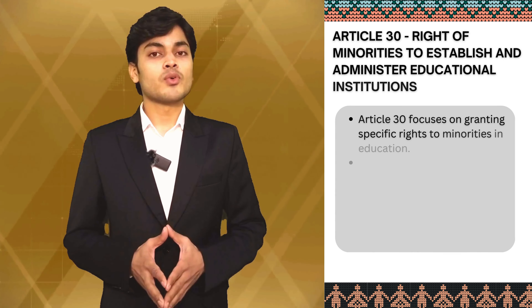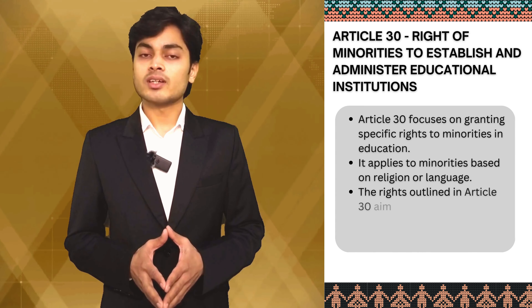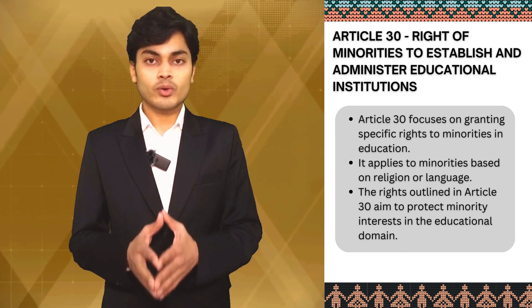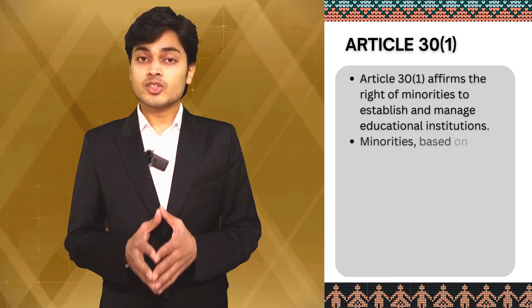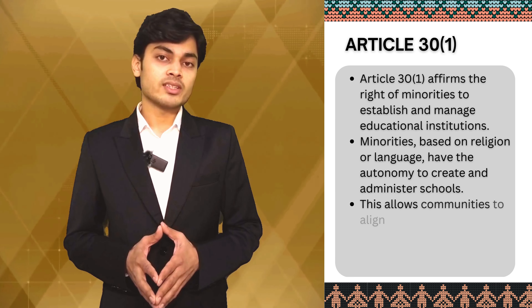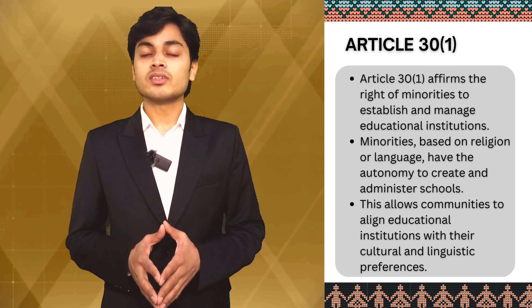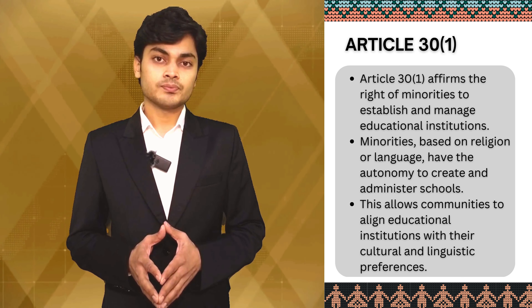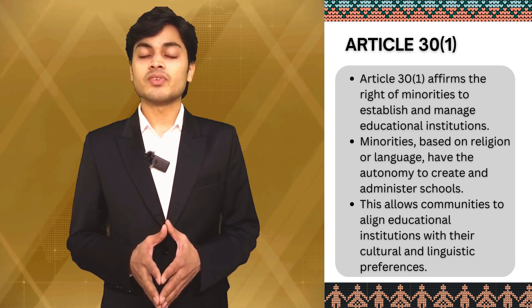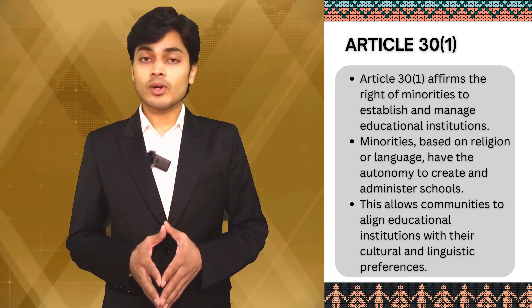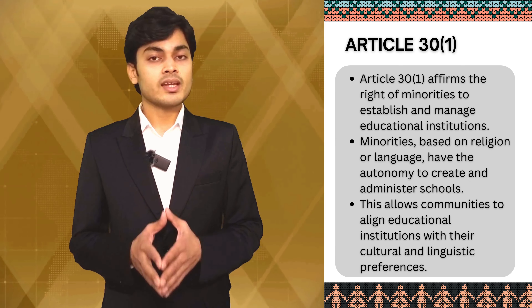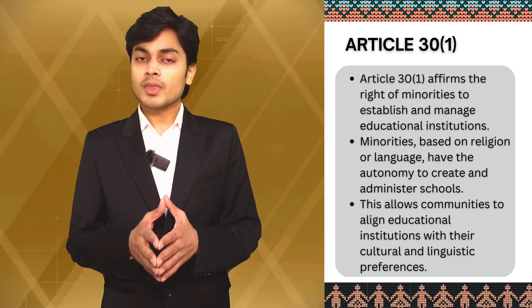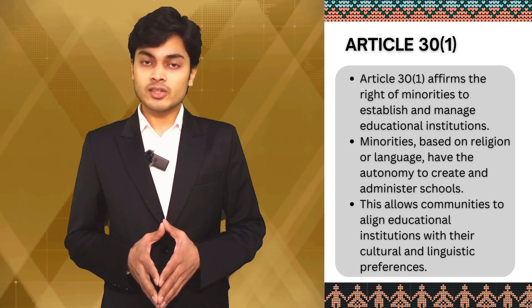Now let's shift our focus to Article 30, which grants specific rights to minorities, whether based on religion or language, in the realm of education. Clause 1 of Article 30 establishes the right of minorities to establish and administer educational institutions of their choice. This means that communities, whether defined by religion or language, have the autonomy to set up and manage educational institutions in alignment with their linguistic and cultural preferences.